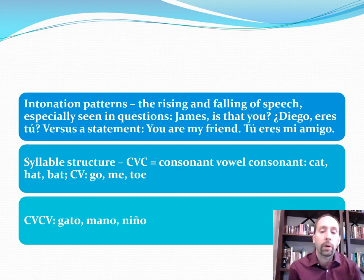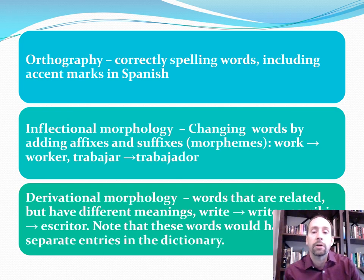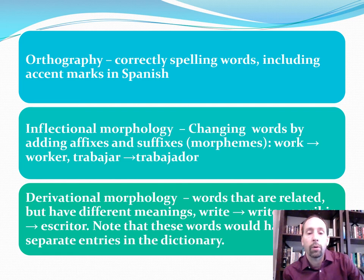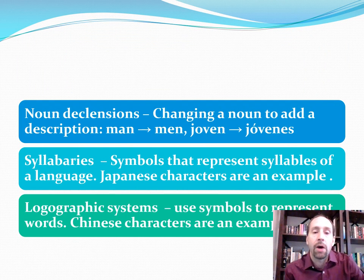Orthography is the correct spelling of words, including accent marks — especially important in Spanish or other languages, and umlaut in German. Inflectional morphology involves changing words by adding affixes and suffixes — 'work' becomes 'worker,' 'trabajar' becomes 'trabajador.' These forms are typically based on a root found in the dictionary. Derivational morphology involves similar-looking words that may get a different dictionary entry — for example, 'write' and 'writer,' or in Spanish 'escribir' and 'escritor.'